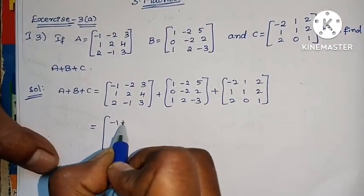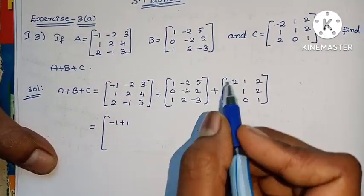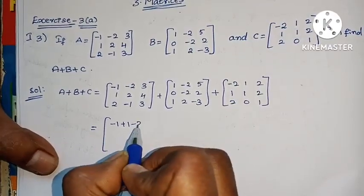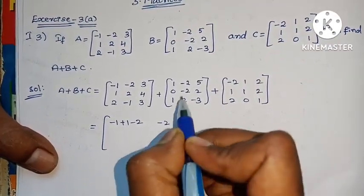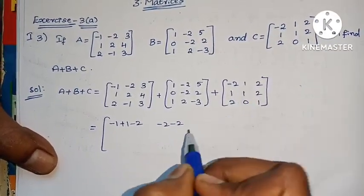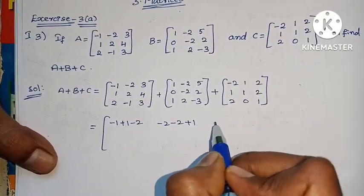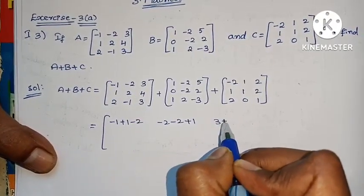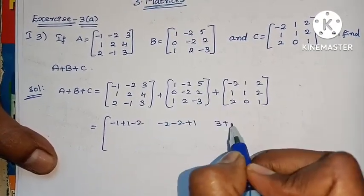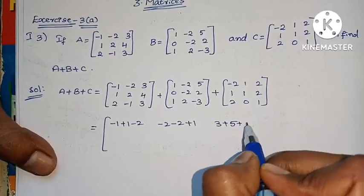Adding the 1st terms of each matrix: minus 1, minus 1, plus 1, plus minus 2, minus 2, minus 2, minus 2 plus 1, then 3 plus 5 plus 2.